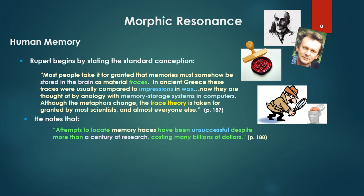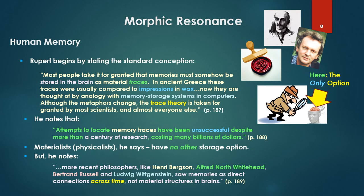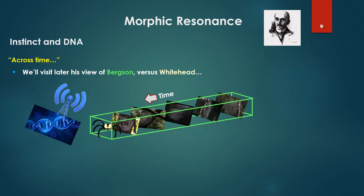He notes that attempts to locate memory traces have been unsuccessful despite more than a century of research, costing many billions of dollars. Materialists, or physicalists, he says, have no other storage option — it's got to be in the brain. But he notes that more recent philosophers like Henry Bergson, Alfred North Whitehead, Bertrand Russell, and Ludwig Wittgenstein saw memories as direct connections across time, not material structures in brains. We'll visit this later — his view of Bergson versus Whitehead.